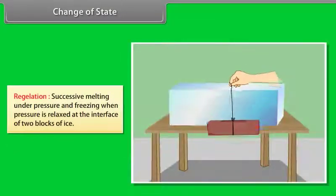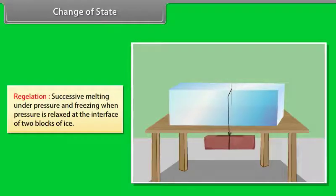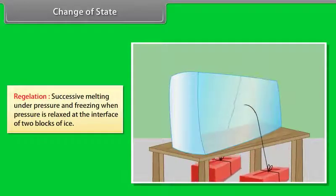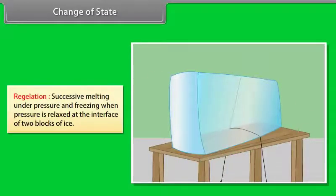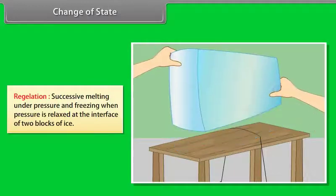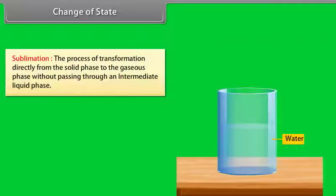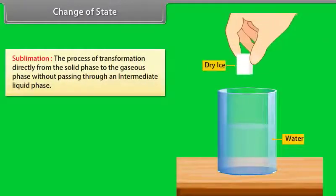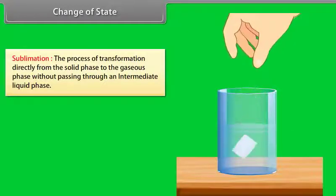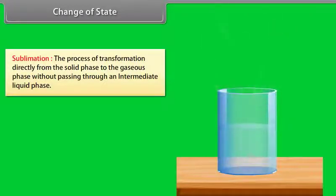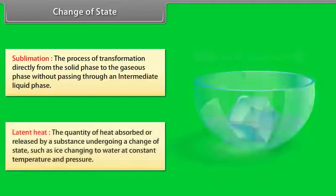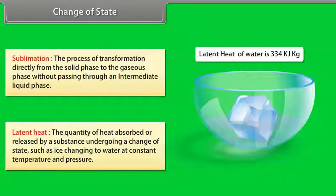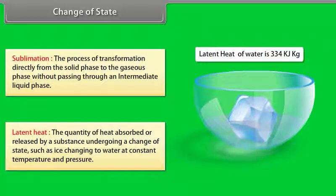Regelation is the successive melting under pressure and freezing when pressure is relaxed at the surface or interface of two blocks of ice. Sublimation is the process of transformation directly from the solid phase to the gaseous phase without passing through an intermediate liquid phase. Latent heat is the quantity of heat absorbed or released by a substance undergoing a change of state, such as ice changing to water, at constant temperature and pressure.